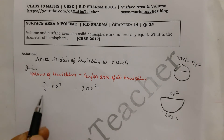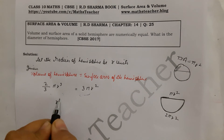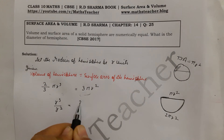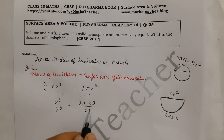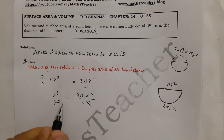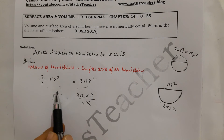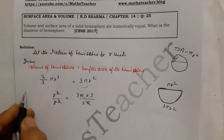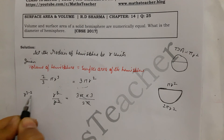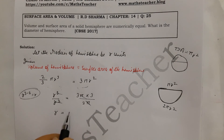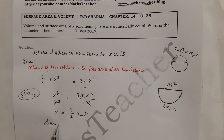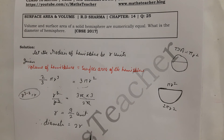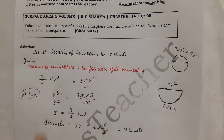Now solving: (2/3)πr³ = 3πr². Divide both sides — π cancels, r² cancels (since r² is on both sides). We get (2/3)r = 3, so r = 3 × (3/2) = 9/2 units. Therefore the diameter is 2r = 2 × (9/2) = 9 units.